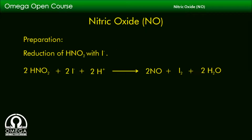It can also be prepared by reduction of HNO2 with iodide ion. The reaction involved is: 2HNO2 + 2I⁻ + 2H⁺ reacts to form 2NO + I2 + 2H2O.